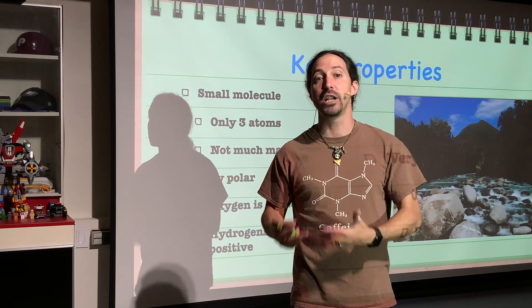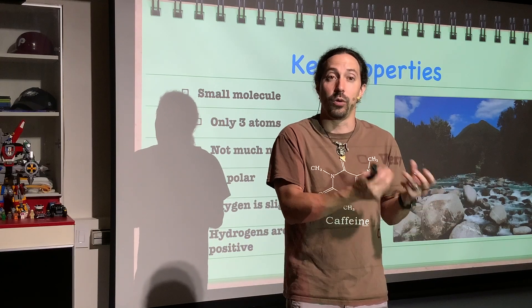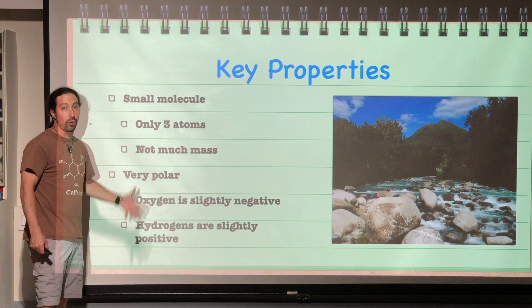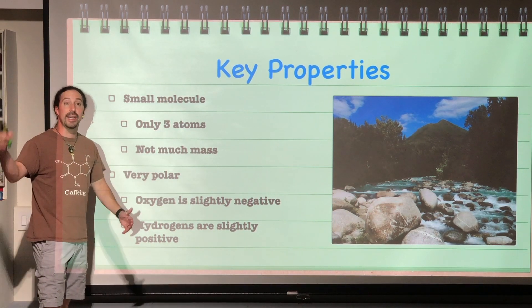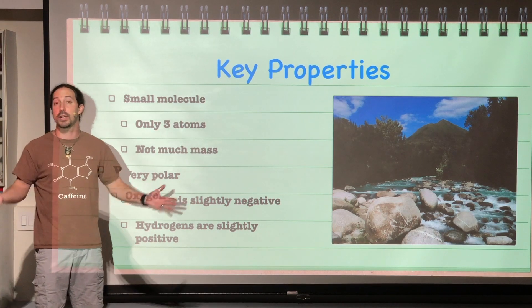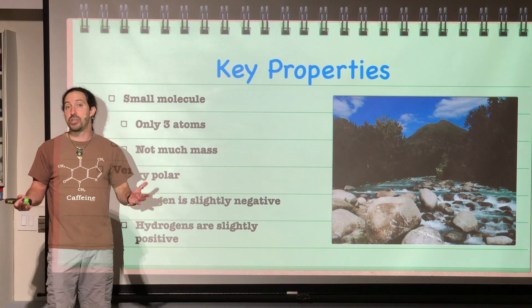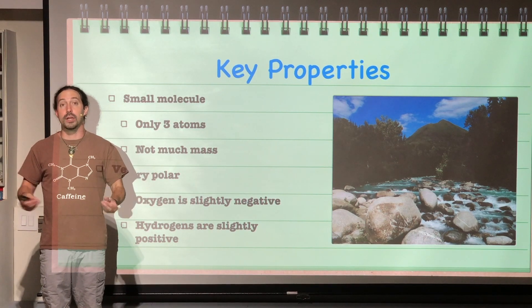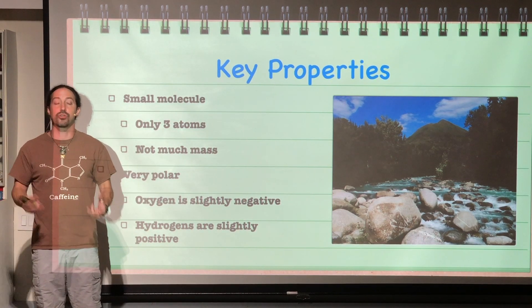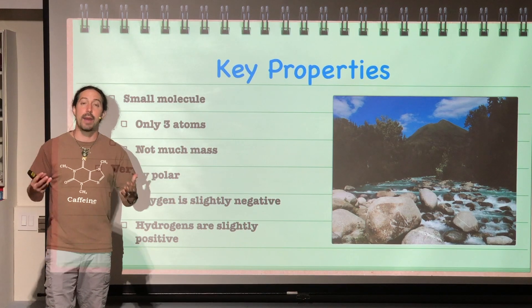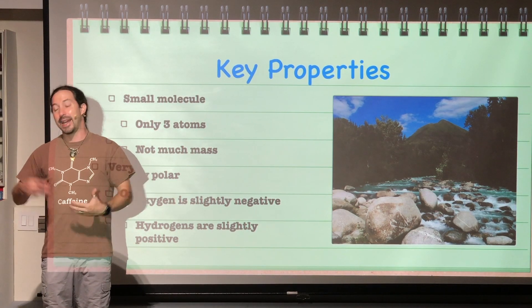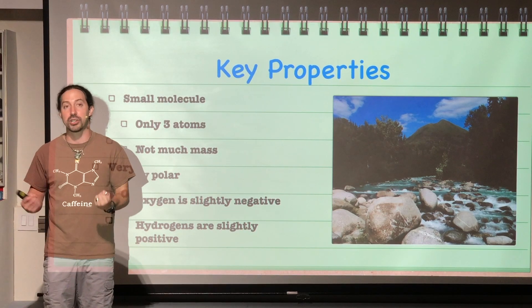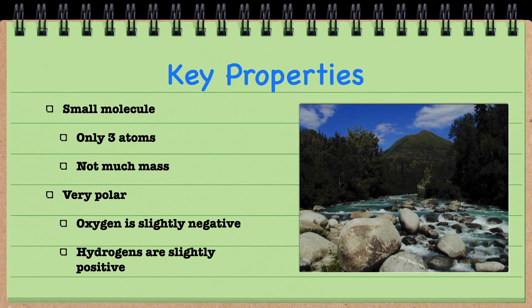And it's very polar because oxygen is the second most electronegative element on the periodic table. And hydrogen, well, it's not very electronegative at all. So it's very polar. The pull that oxygen has on those electrons is very strong. And that means that slightly negative area and that slightly positive area is going to allow for a very strong attraction to other negative or positive charges.